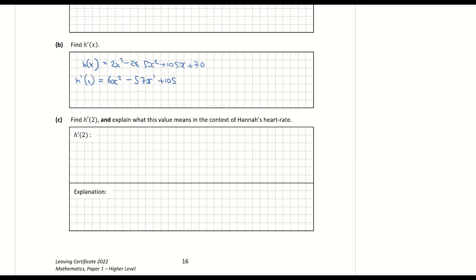Part c: find h dash of 2 and explain what this value means in the context of Hannah's heart rate. I'm subbing in 2 for x, but make sure you're subbing it into the derivative: 6 times 2 squared minus 57 times 2 plus 105. Working that out, I get h dash of 2 to be 15.